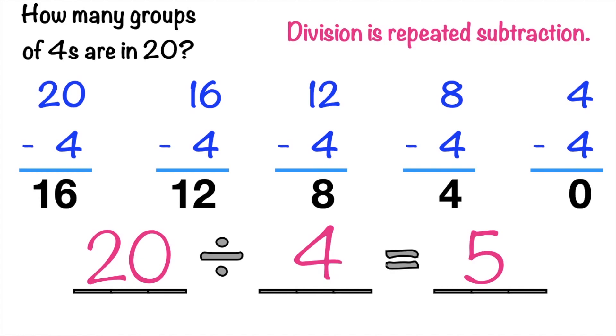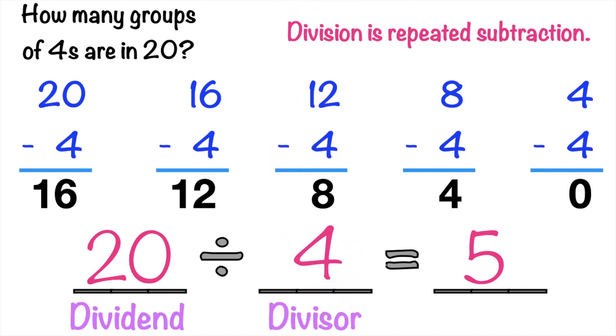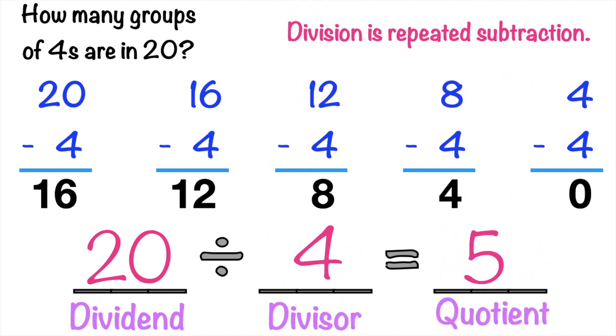20 is what we call the dividend. 4 is the divisor. And 5 is the quotient.